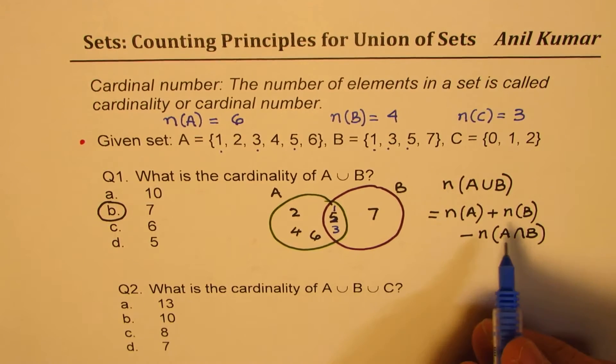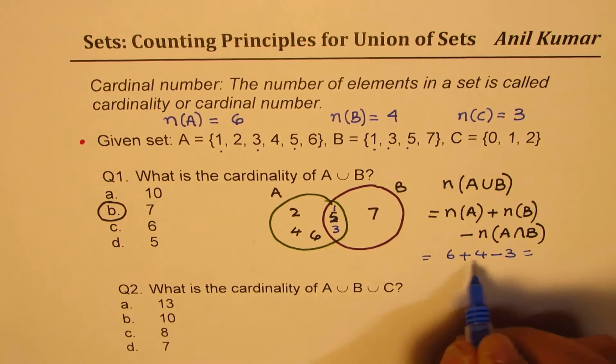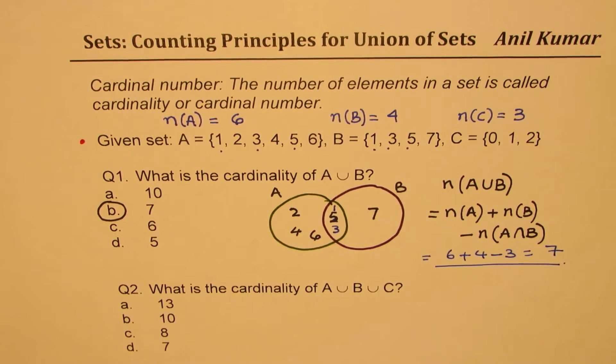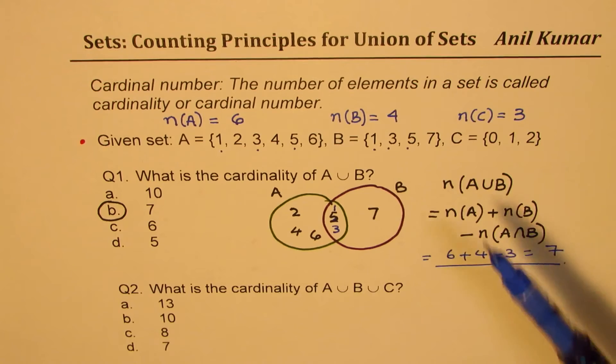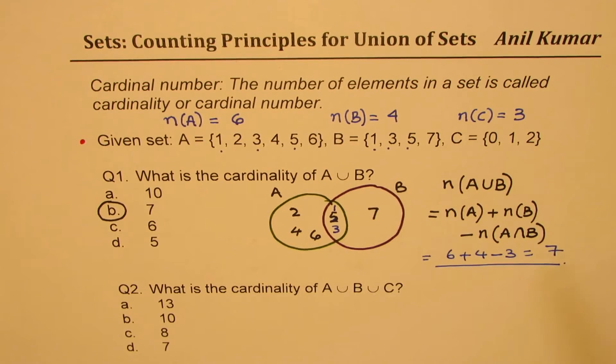Now, if you substitute these values, then we have 6 plus 4 minus 3, which is 10 minus 3 is 7. You get the correct answer. So, that is how you could also do when we provide you with only the number of elements, but not the elements themselves. I hope that gives you a good link. So, we'll have questions based on this concept later.